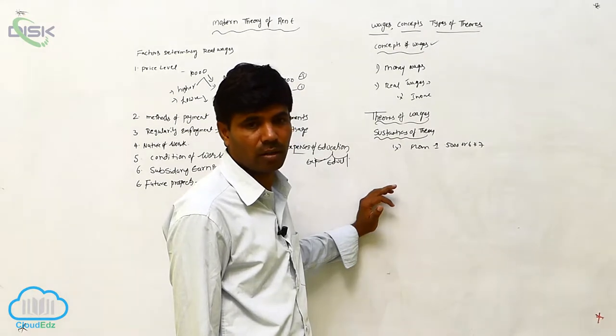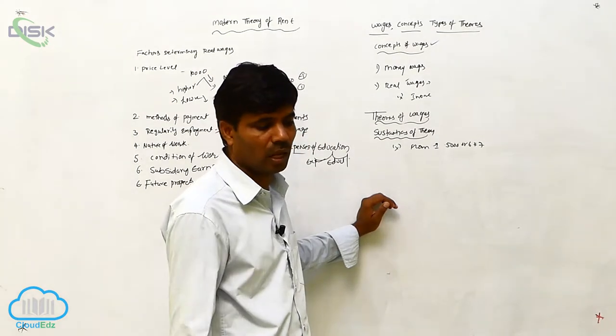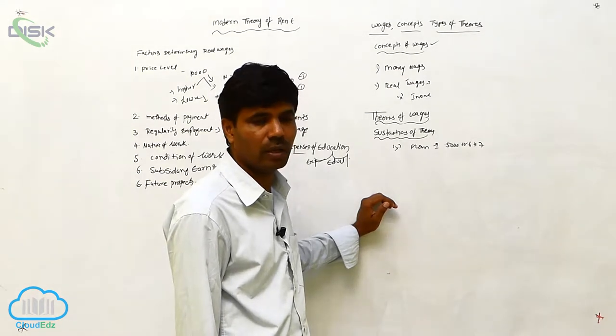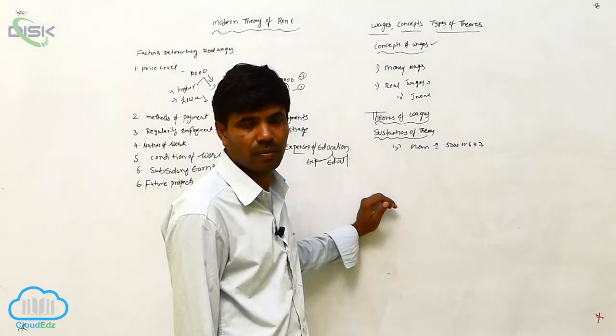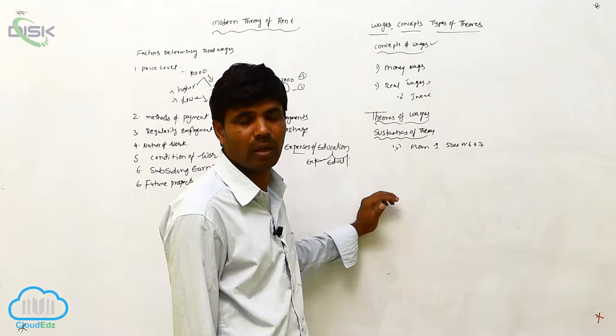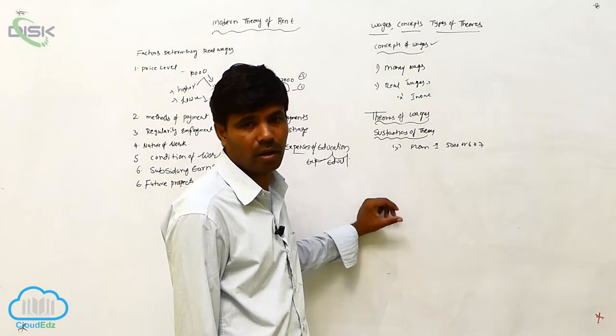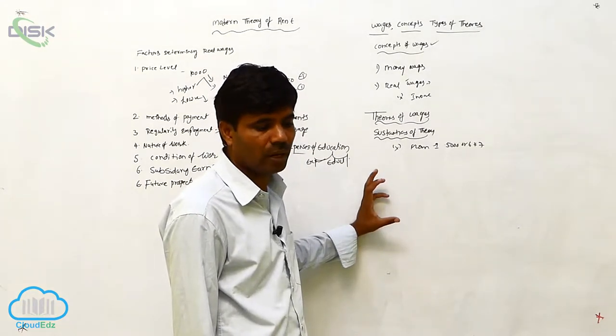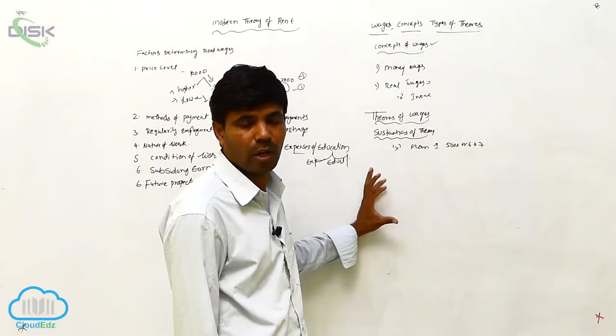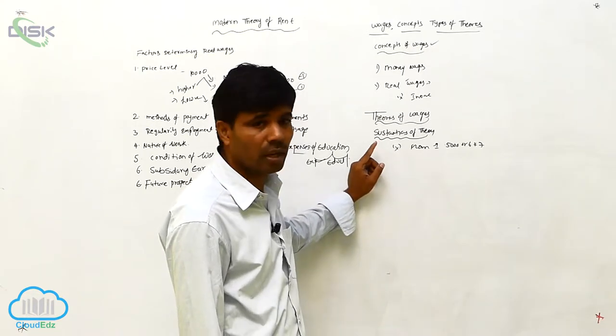The subsistence theory explains that if wages are below the subsistence level, the supply of labor will decrease. If the level of subsistence is higher, the supply of labor will increase. This is the relationship between subsistence and labor.